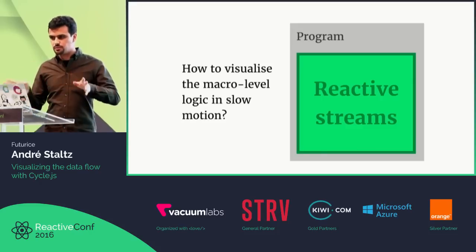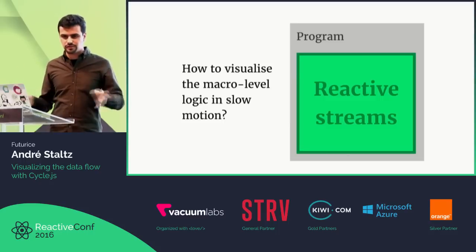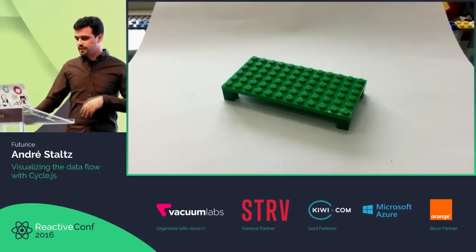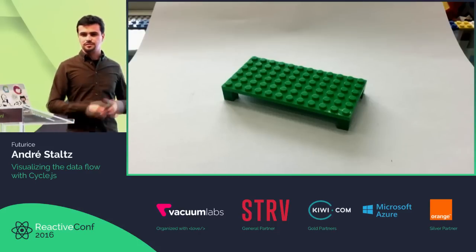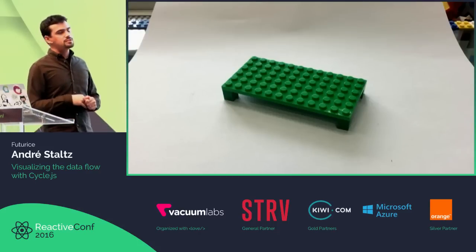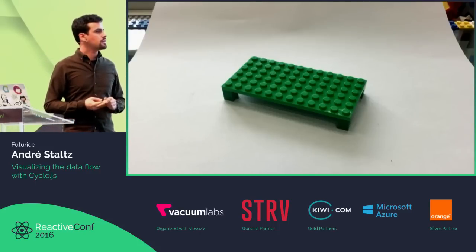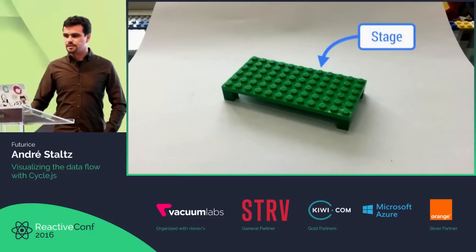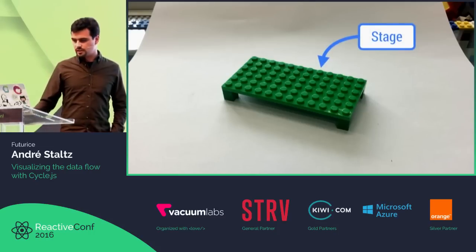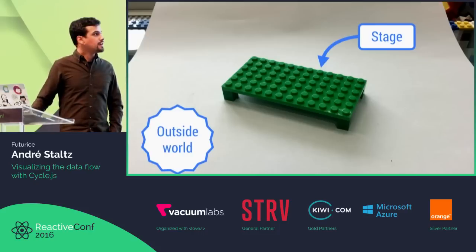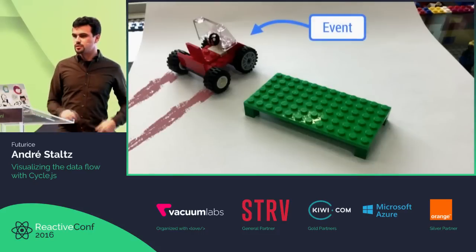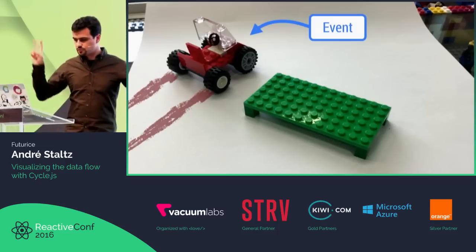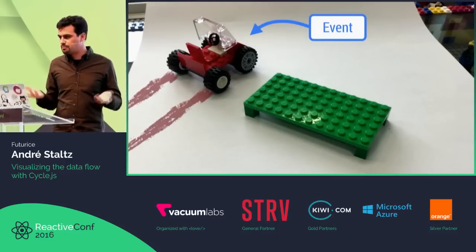Today we're going to understand streams and how they are used in CycleJS and how it's visualizable. I'm not going to use code — I'm going to use this. Over there is a stage and it's green; this stage is green as well. Outside of the stage there's the outside world, and in the outside world things happen — like some car passed by, that's an event. Anything that happens is an event.